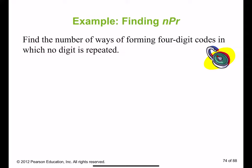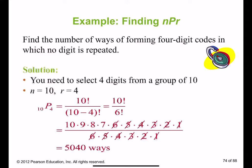Find the number of ways of forming four-digit codes in which no digit is repeated. No digit is repeated. So how many total digits do we have? We need four-digit codes, right? One, two, three, four. So every number total can be 10, correct?